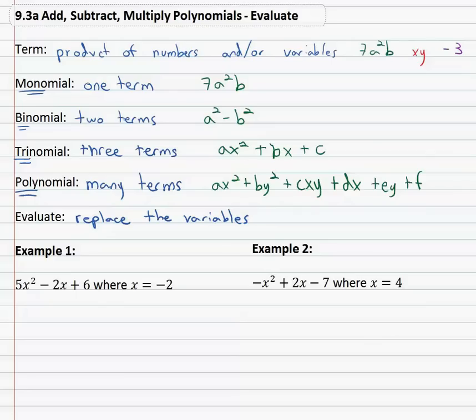So for example, if we have 5x² minus 2x plus 6 and we want to know that x equals negative 2, what that simply means is take each of the x's and we're going to replace them with what x represents, the negative 2.